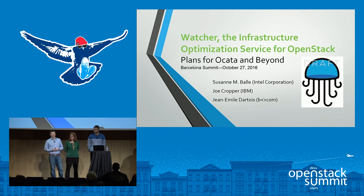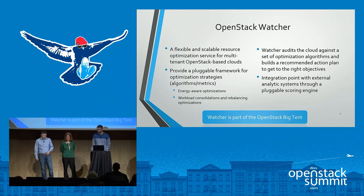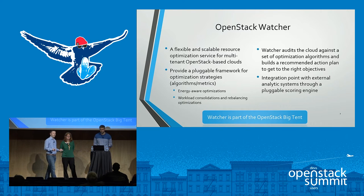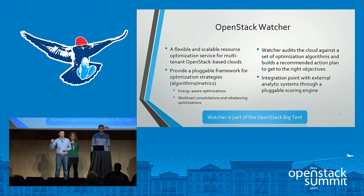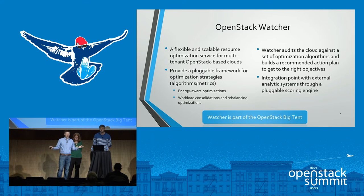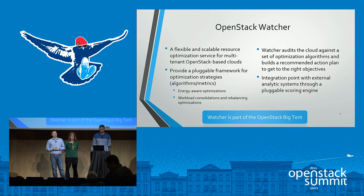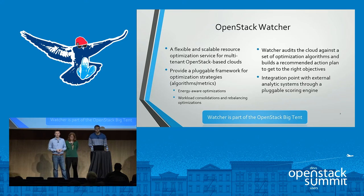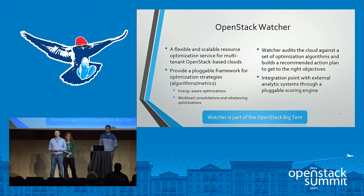So what is Watcher? Watcher is a flexible resource optimization service for OpenStack clouds. OpenStack has done a good job with initial placement of a virtual machine using the Nova scheduler, but what happens over time is that clouds tend to become imbalanced. You put a workload out there initially, and over time resource utilization can vary greatly — workloads spin up and become very busy while other hosts may be idle. There are many different optimization strategies you can apply.